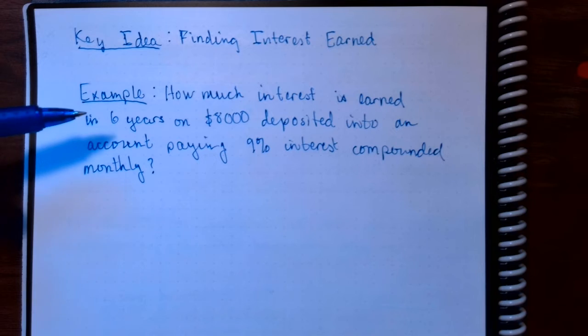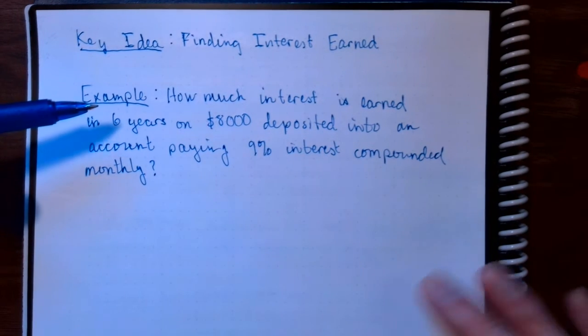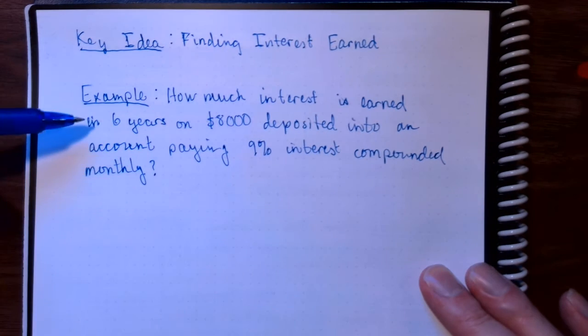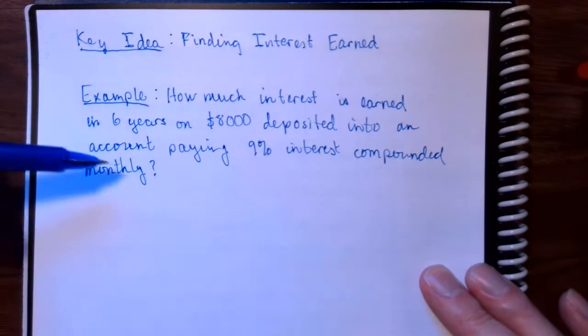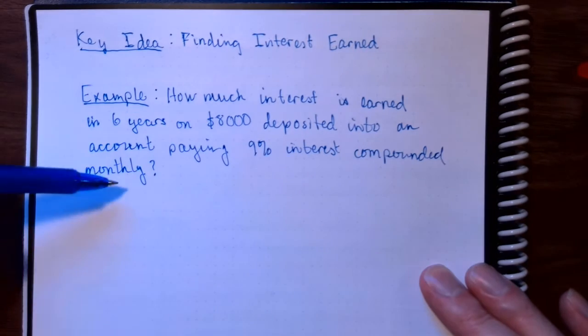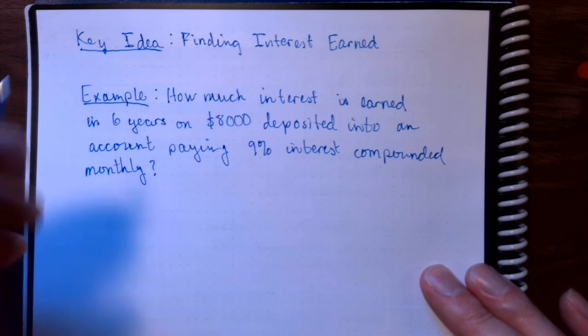The example we'll look at is how much interest is earned in 6 years on $8,000 deposited into an account paying 9% interest compounded monthly. So let's think about what we know.